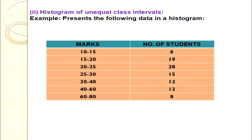Analyzing the data: marks 10–15, 15–20, 20–25, 25–30 have a class interval gap of 5. But the next classes 30–40, 40–60, 60–80 have changing gaps — 30–40 is 10, 40–60 is 20, 60–80 is 20. This is a situation of unequal class intervals. The series is also continuous — upper limit equals next lower limit. Let's see the steps for drawing a histogram with unequal class intervals.